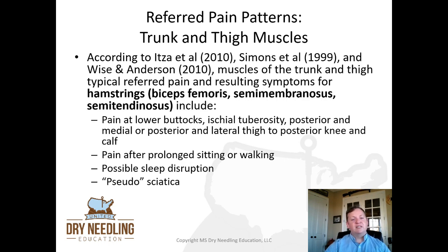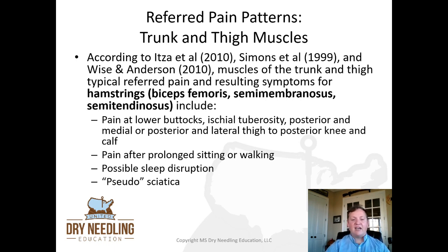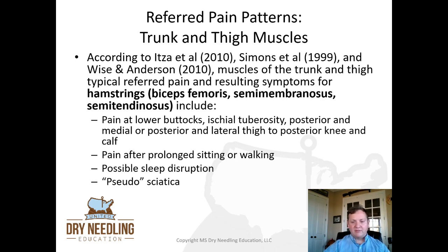When we talk about the hamstrings — the biceps femoris on the lateral side, semimembranosus and semitendinosus on the medial side — pain at the lower buttocks, the ischial tuberosity, posterior medial or posterior lateral thigh to posterior knee into the calf, pain after prolonged sitting or walking, possible sleep disruption, and a pseudosciatica-type pain can all be implicated with the hamstrings.